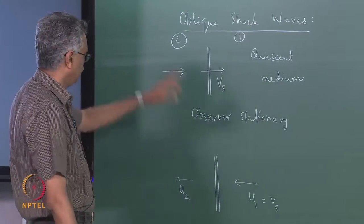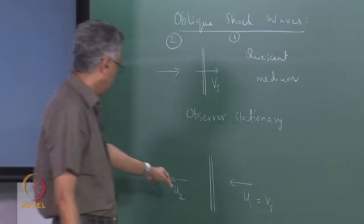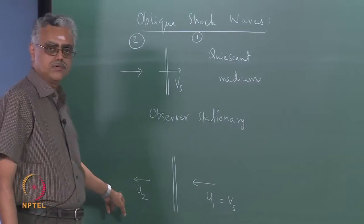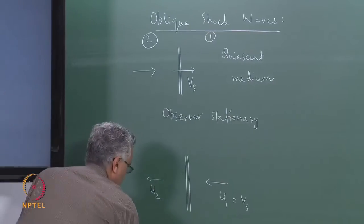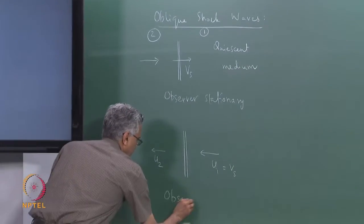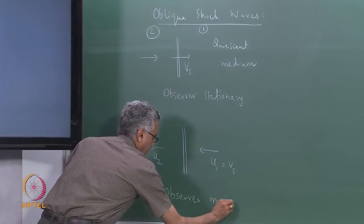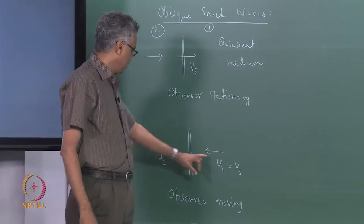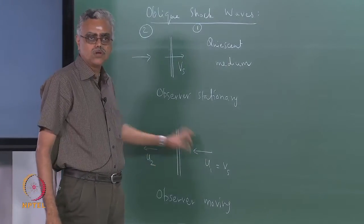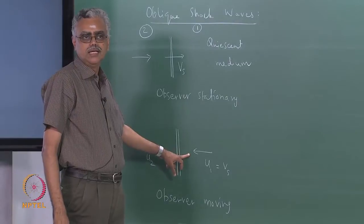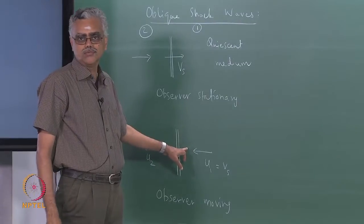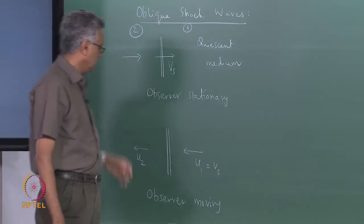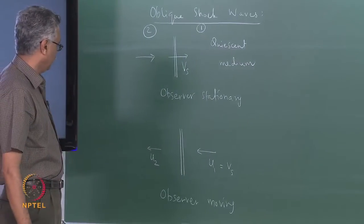An expansion shockwave was forbidden by the second law of thermodynamics. These are the highlights of the normal shockwave discussion. Notice that in this observer-moving frame of reference, the velocity vectors both before and after are normal to the shockwave — hence the name 'normal shockwave' — and there is no change in the direction of the fluid after it passes through the shockwave.